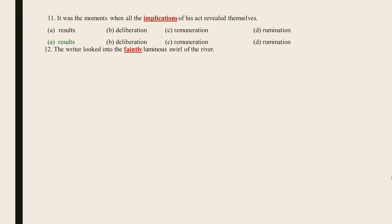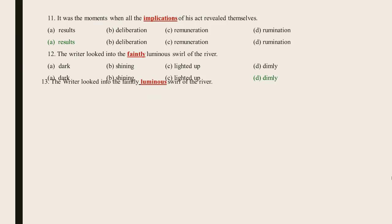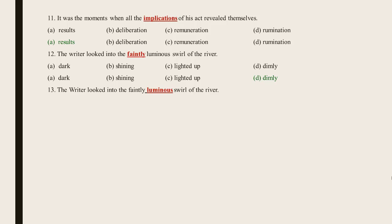Statement 12: The writer looked into the faintly luminous swirl of the river. The underlined word is faintly — the right answer is Dimly. Statement 13: The writer looked into the faintly luminous swirl of the river. The underlined word is luminous — the right answer is Bright.